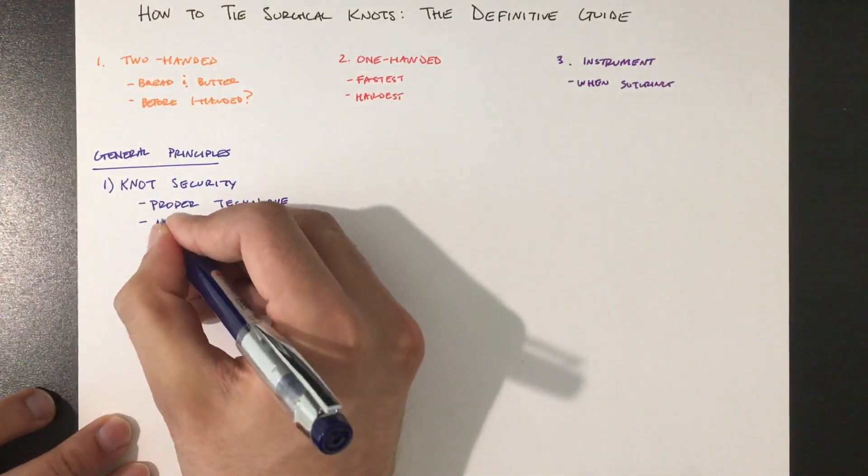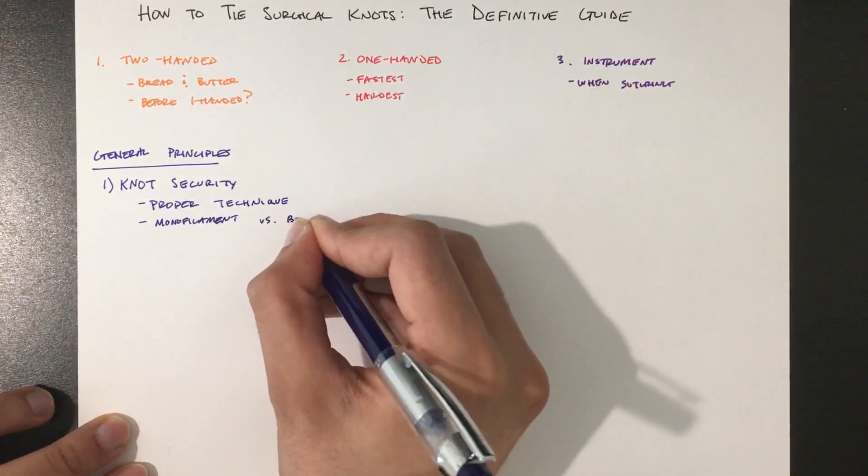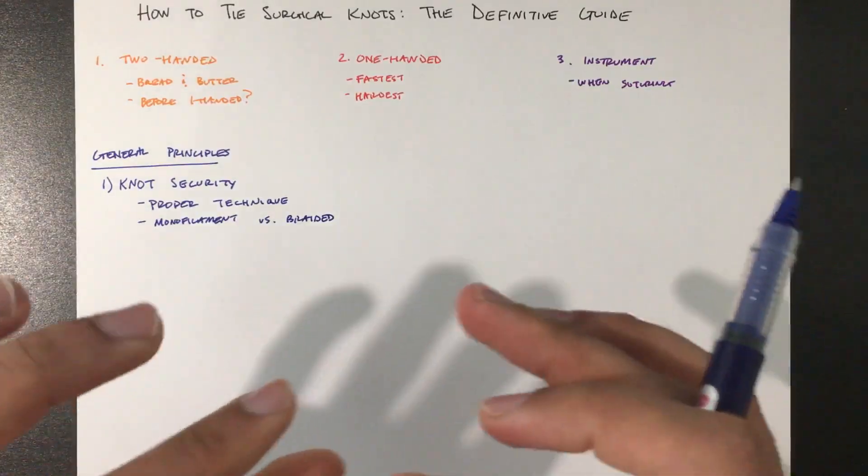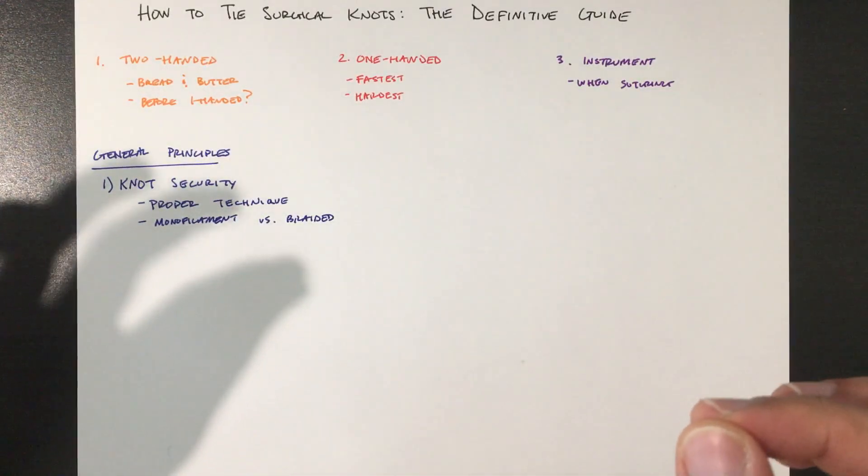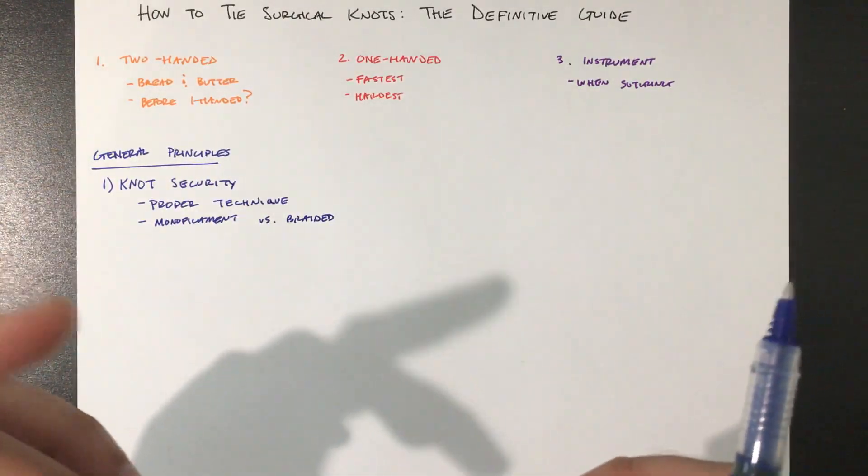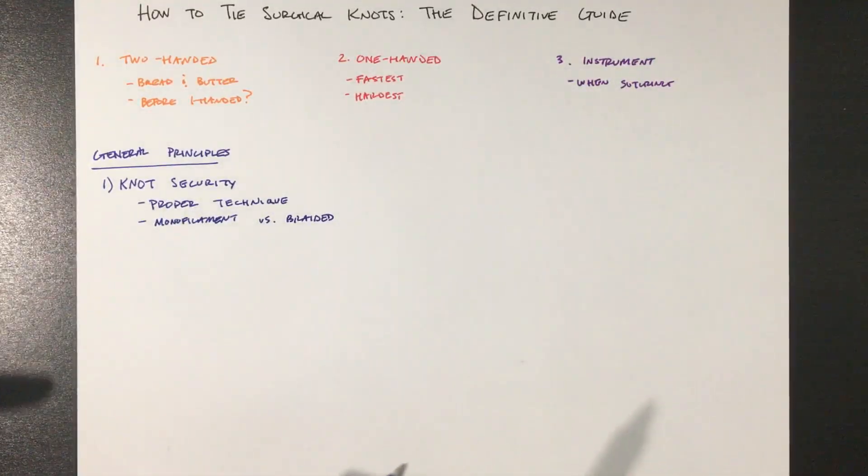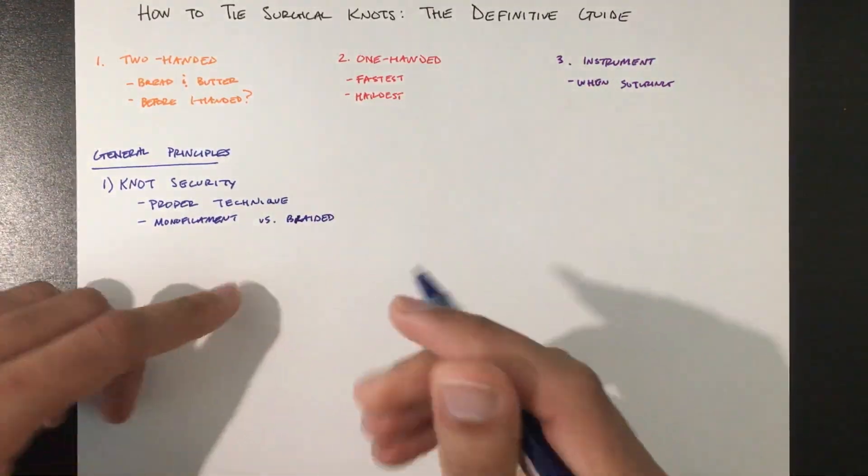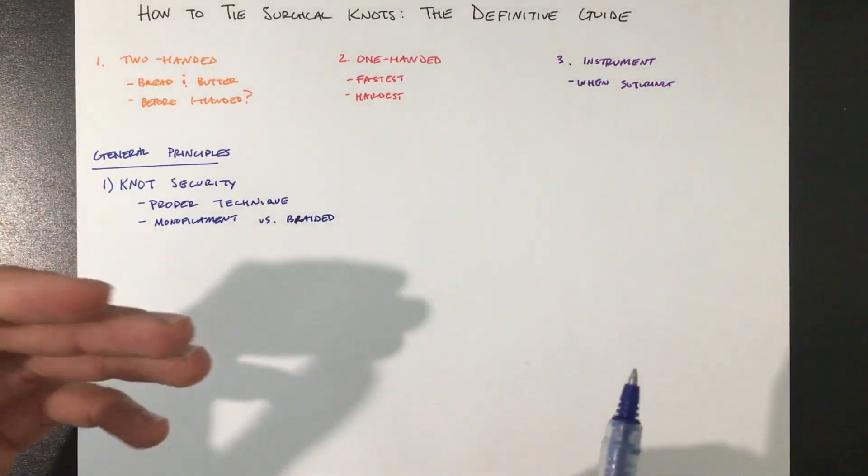And lastly, between monofilament versus braided suture. Monofilament, which is just much more slippery, is going to require more throws to achieve the same knot security, whereas braided has a little bit more friction, so you can get the same knot security with fewer throws.